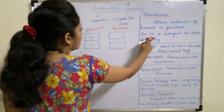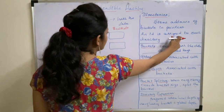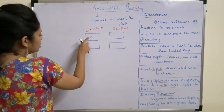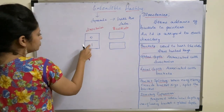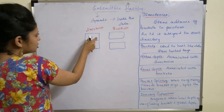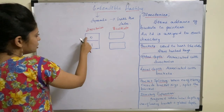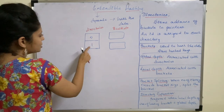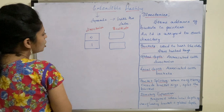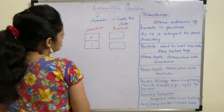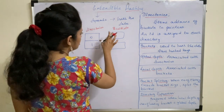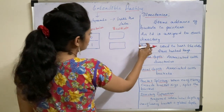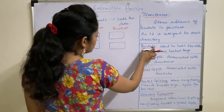An ID is assigned to each directory entry. Here, if you observe, the ID assigned to this directory entry is 0 whereas here the ID assigned to the other one is 1.